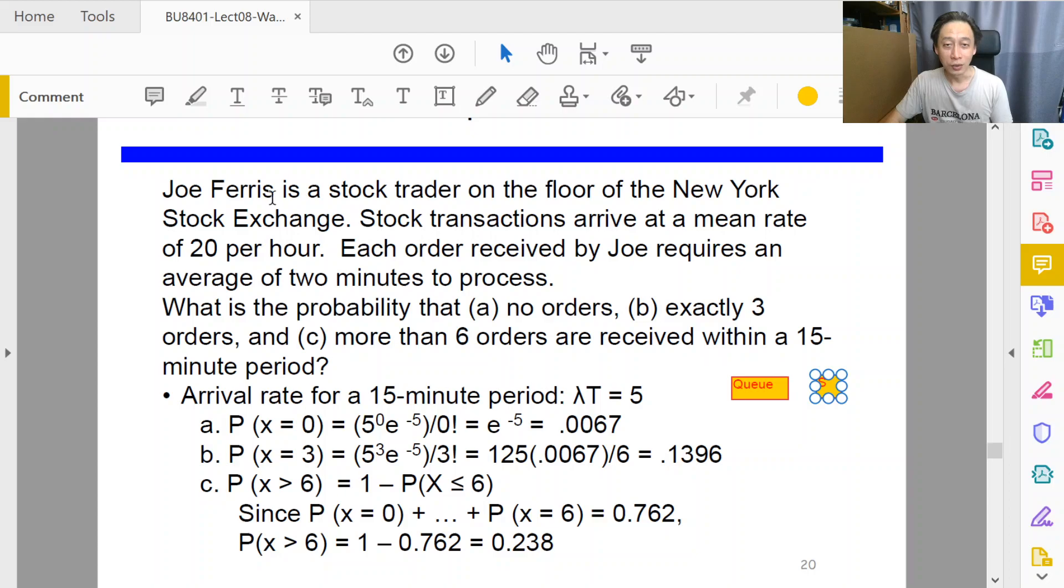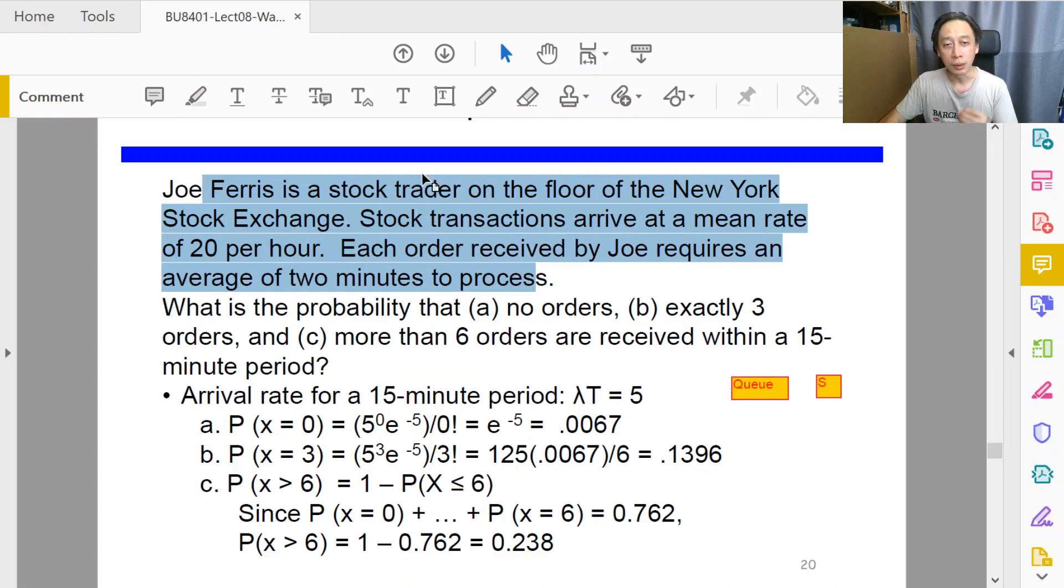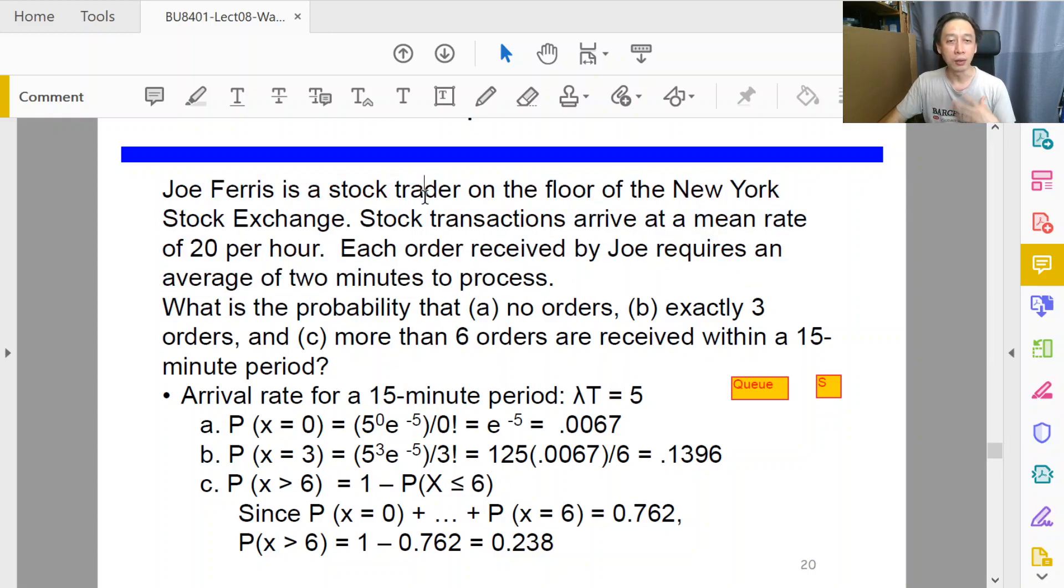Here, Joe Ferris is a stock trader. This is what the layman would describe. Our job is to pierce through the words and say, 'I see such and such.' One is the server, the other is the customer. So in this question, what is the server? Well, Joe Ferris is a stock trader on the floor. Is the floor the server? Is New York Stock Exchange the server? Let's pause and keep on the shelf for a while and read on.